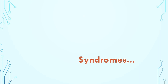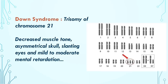On the basis of the types of aneuploidy, a human can have autosomal aneuploidy and sex chromosomal aneuploidy, leading to different kinds of syndromes. In Down syndrome, there is trisomy of chromosome number 21 — an extra chromosome is present in the karyotype at position 21. This can cause decreased muscle tone, asymmetrical skull shape, slanting eyes, and mild to moderate mental retardation.